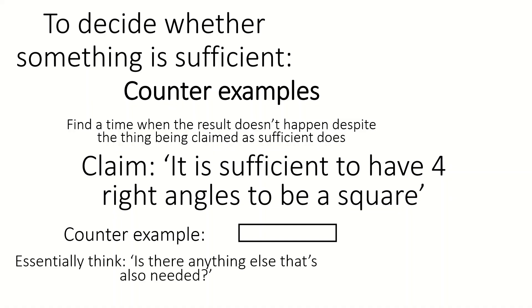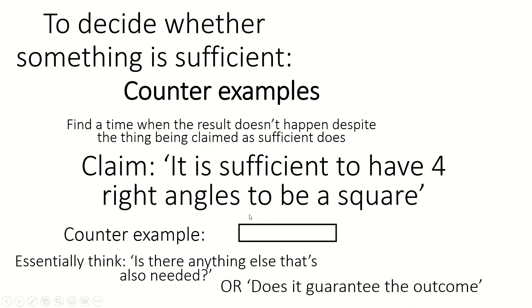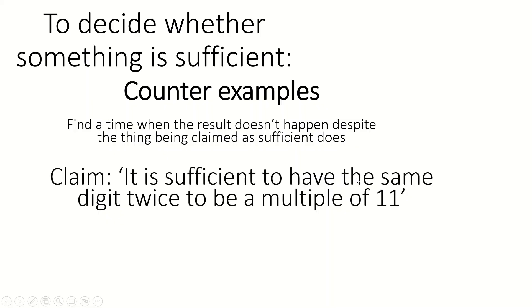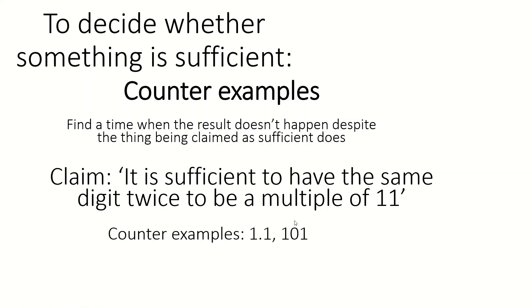You can think to yourself: is there anything else that's needed or required? Does it guarantee the outcome? These are the kinds of things that can help with sufficiency. Another example: it is sufficient to have the same digit twice to be a multiple of 11. That happens with 22, 33, and so on — but you can find counterexamples where you have the same digit twice and you're not a multiple of 11, for example 1.1 or 101.